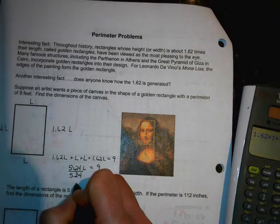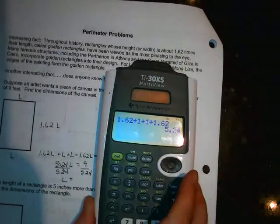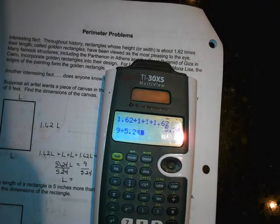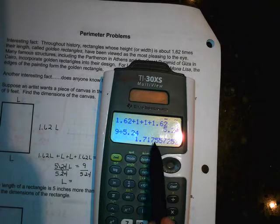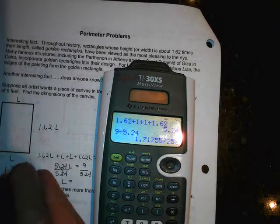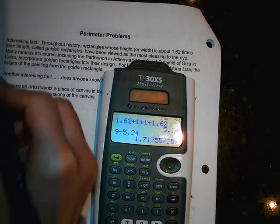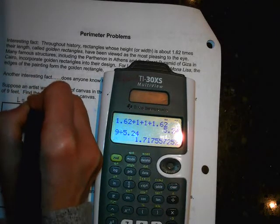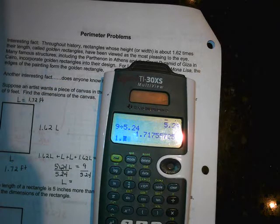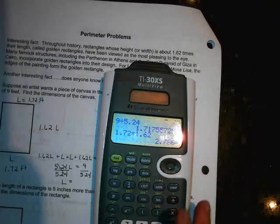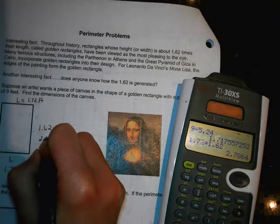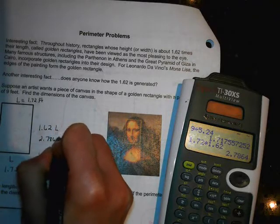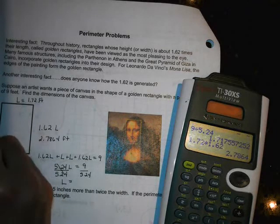5.24 L equals 9. And then you just divide. So we'll have to round it, I'm sure. So let's round it to 2 decimals. So 2 decimals would be the 1, so it looks like I'm going to make it higher because of that 7. So my length is 1.72 feet. So this one's going to be 1.72 feet. So 1.72 times 1.62. So this is going to be equal to 2.7864 feet.